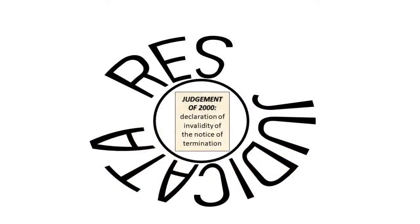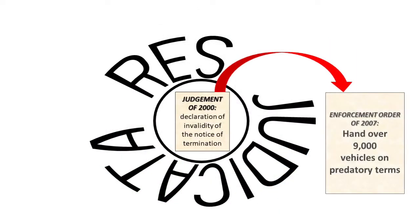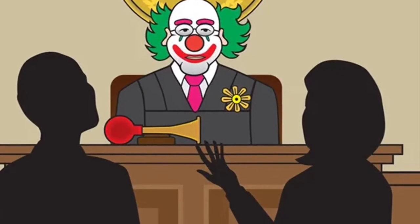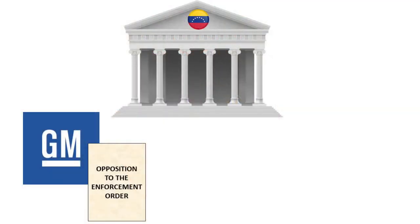The 2007 enforcement order went beyond the res judicata boundaries of the 2000 court's ruling. Indeed, there is no identity between what is intended to be executed — an order to hand over vehicles — and the operative part of the 2000 court's ruling — a declaration of invalidity of the notices of termination. As such, this constituted a grotesque violation of due process.